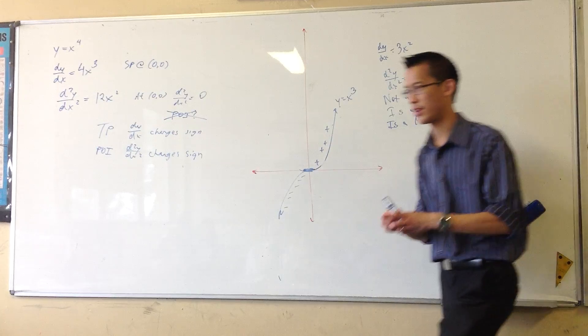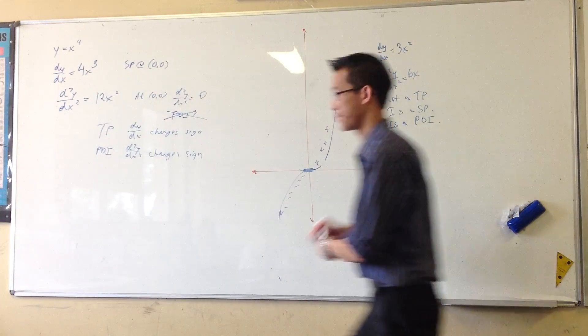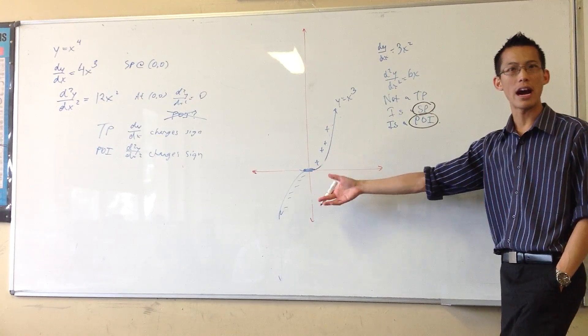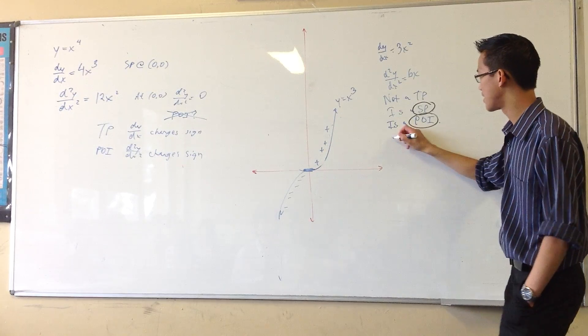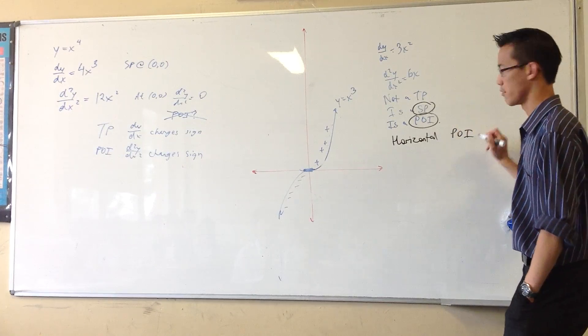Now, this is important. Okay, so I'm going to put it in another color. When you have these two coexisting at the same time, namely, a stationary point and a point of inflection. When you look at it, what kind of feature is it? Well, it's a horizontal point of inflection, right?